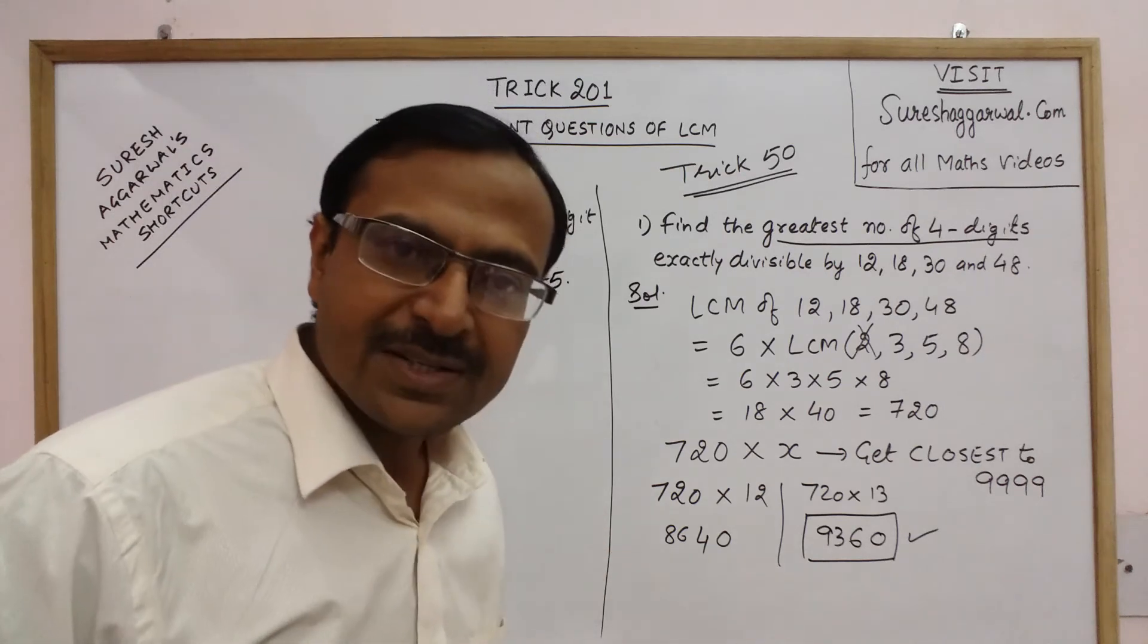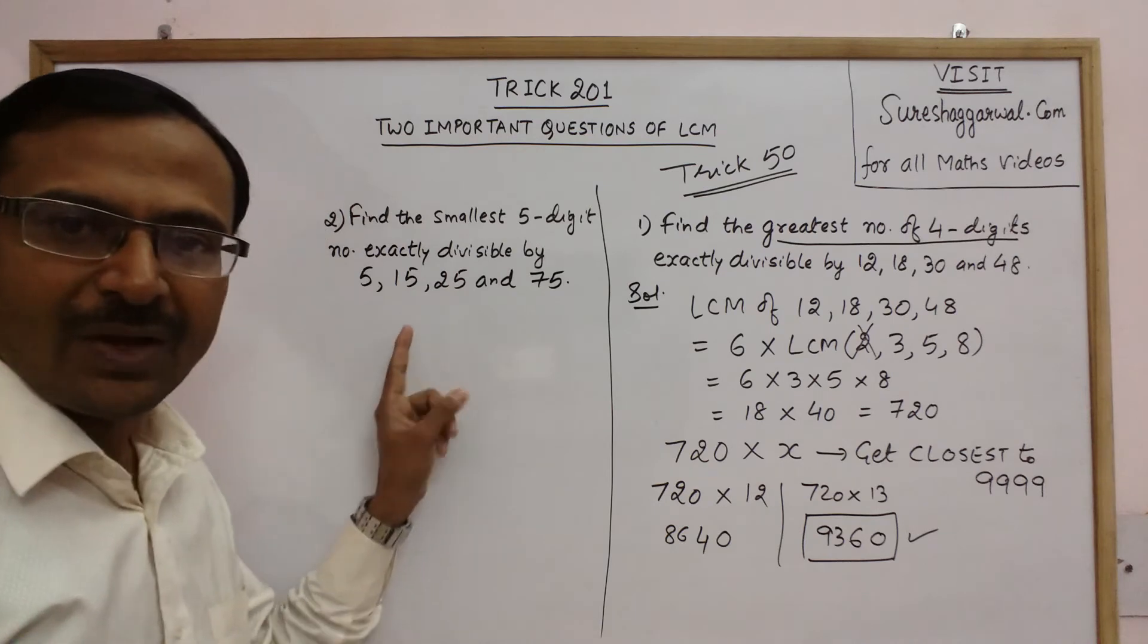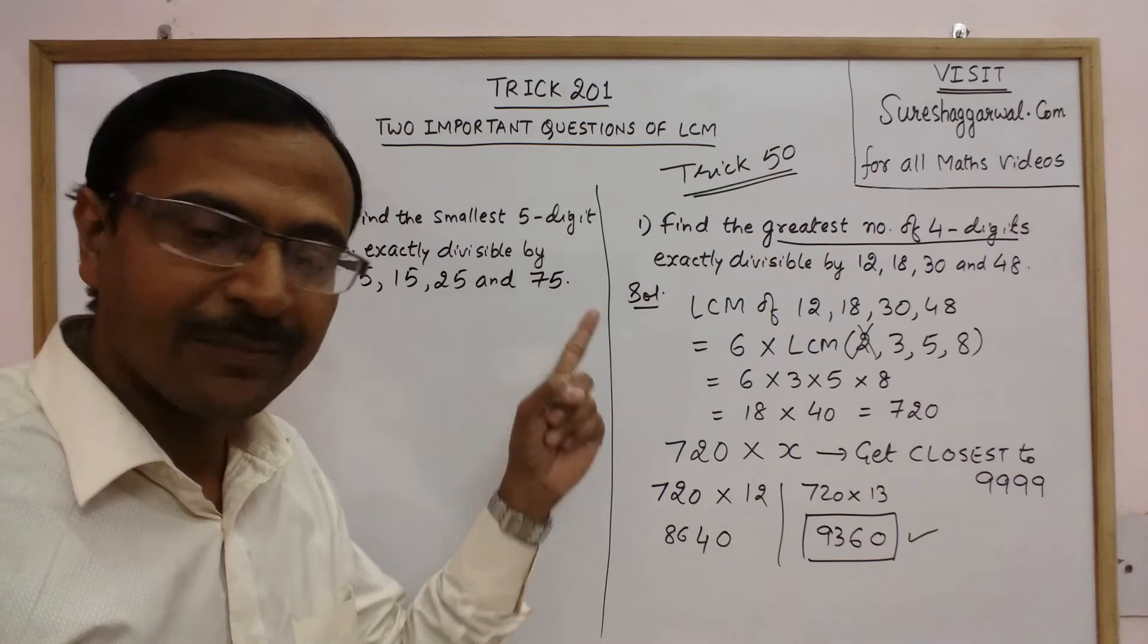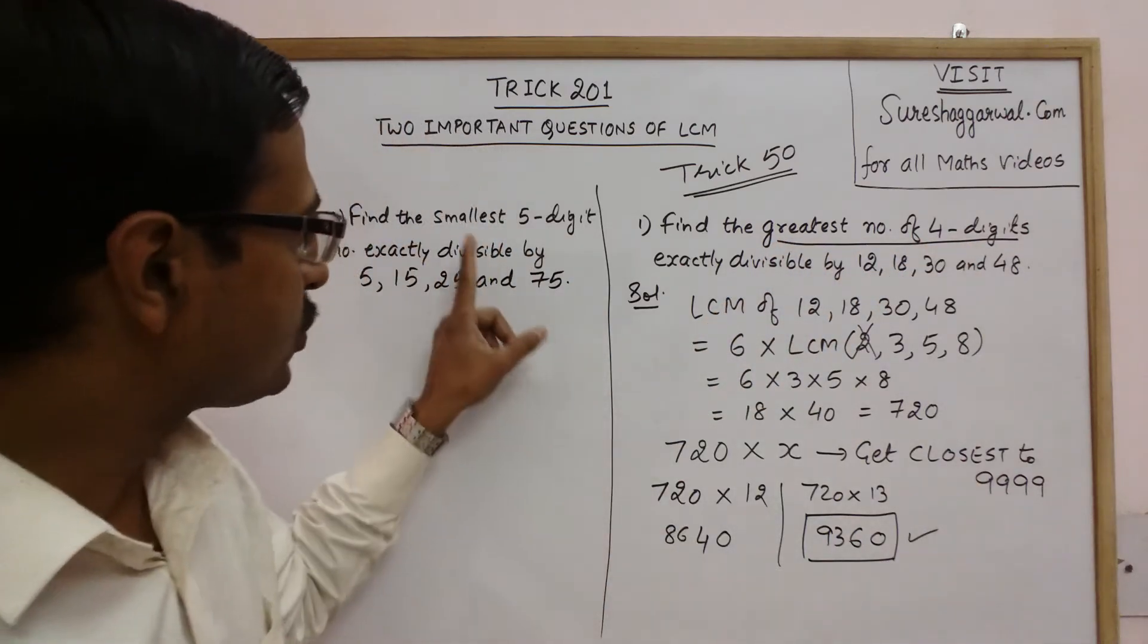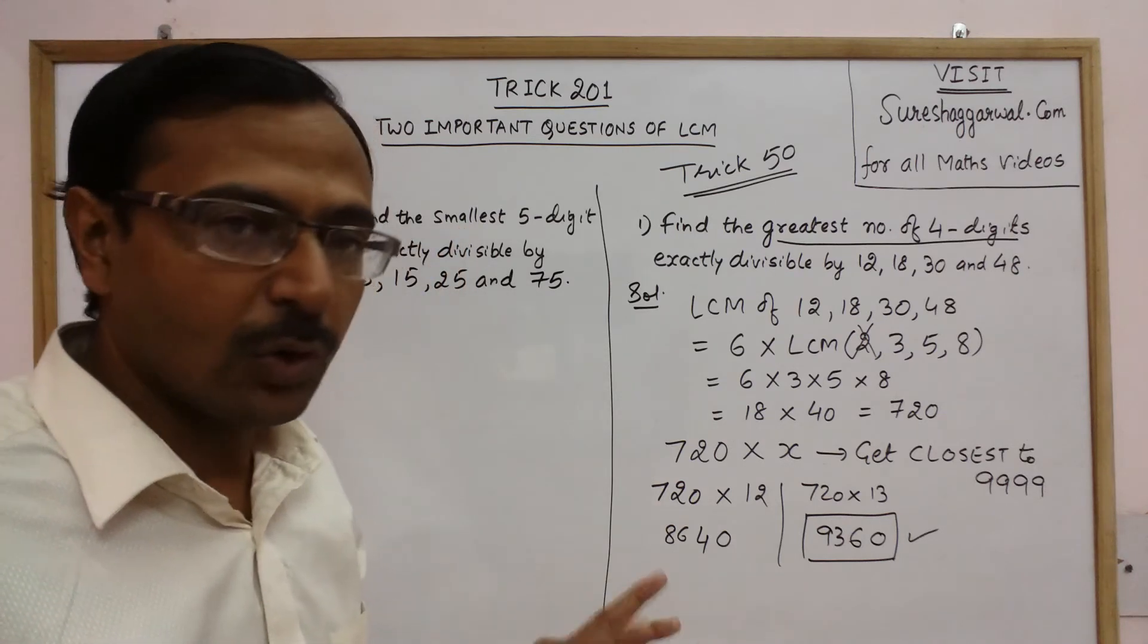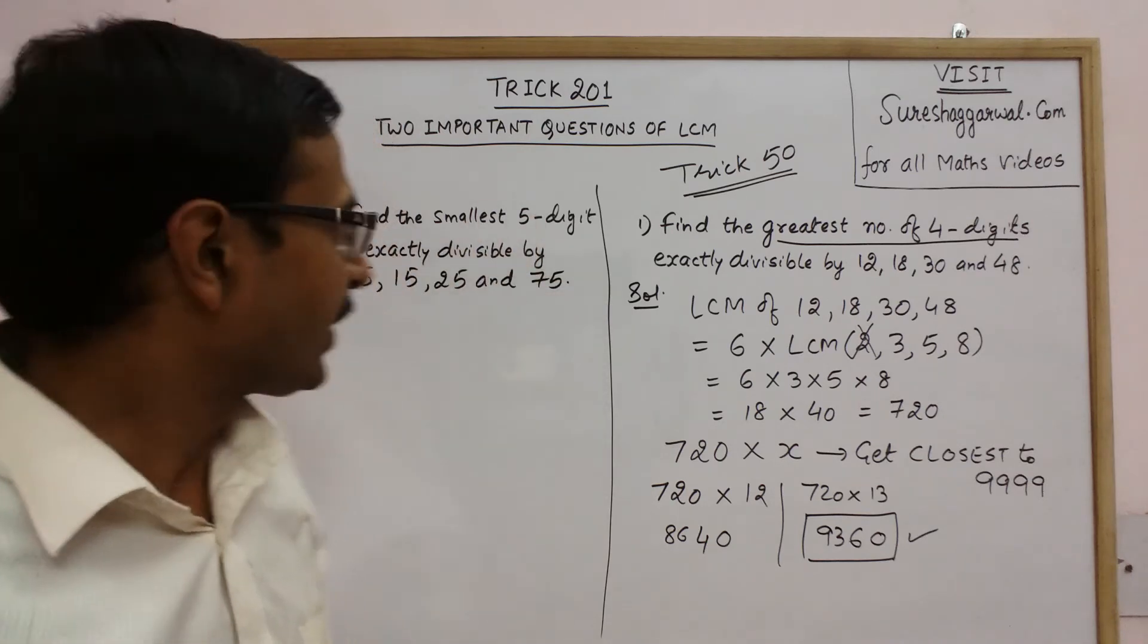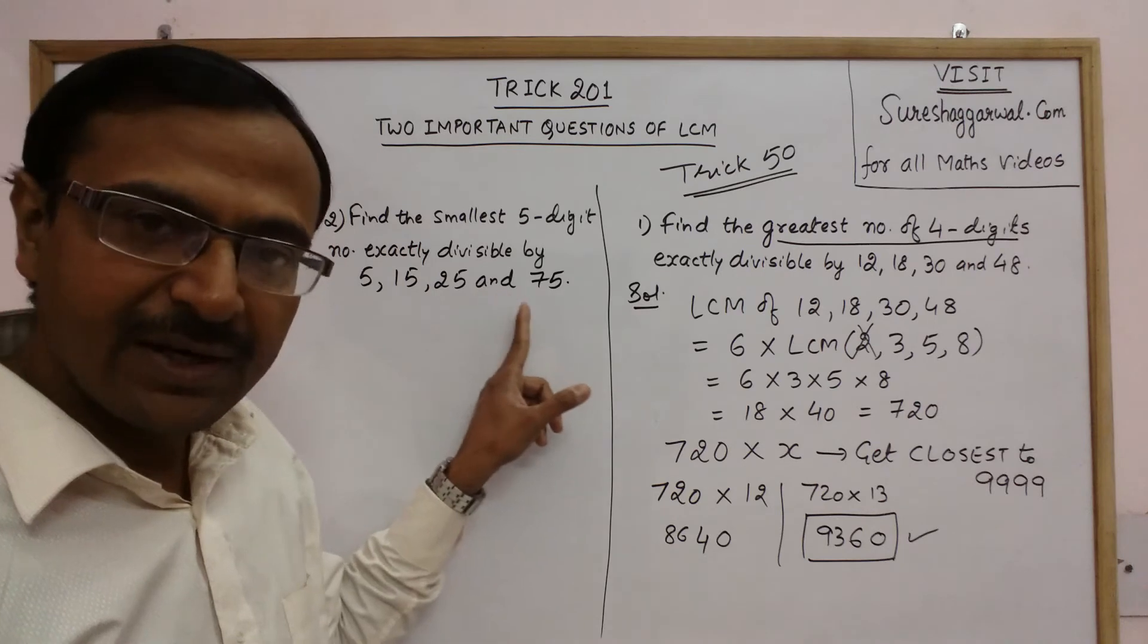Now for understanding this method in a better way let us take one more question. Here in this question you need to find the smallest five digit number. Now remember greatest four digit number is 9999 and now you need to find the smallest five digit number. So now it is 1 followed by four zeros. So smallest five digit number exactly divisible by 5, 15, 25 and 75.